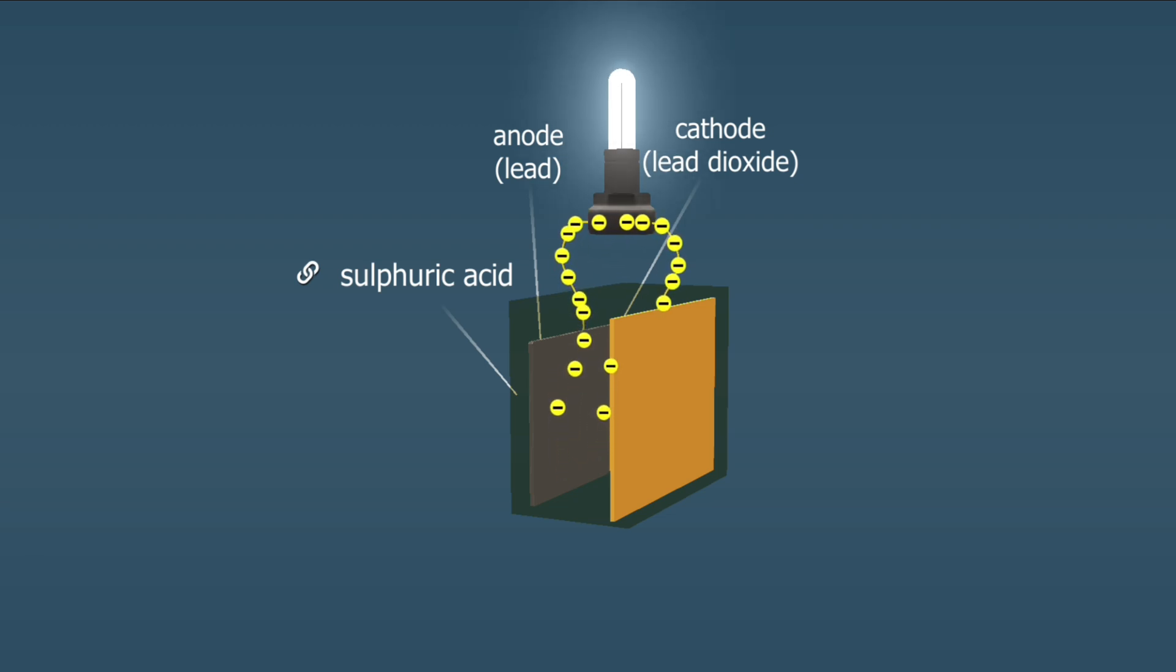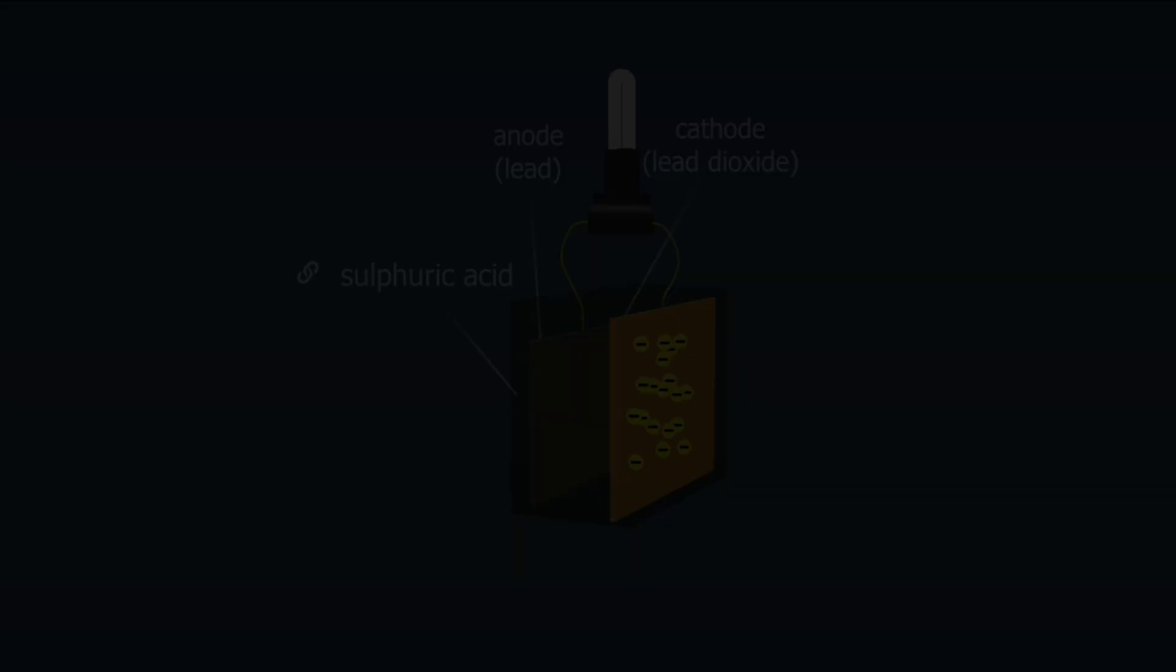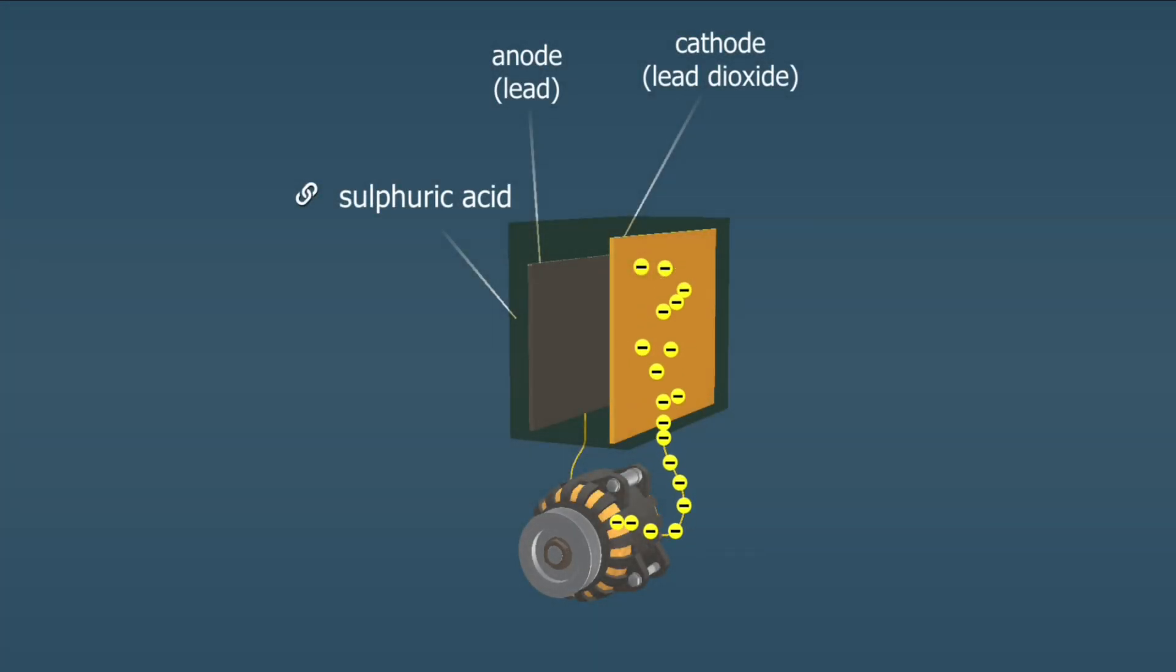When an electric load is connected between the electrodes, electrons start flowing through the circuit—that is, the battery discharges. Charging occurs when an electric current is applied to the battery.